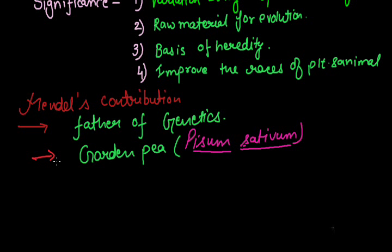Mendel's conclusions were rediscovered simultaneously by three scientists — Hugo De Vries, Carl Correns, and Erich von Tschermak. These three scientists rediscovered Mendel's laws after his death because his work was not recognized when he was alive. Although he presented all his experiments before the Brünn Natural Society in 1865 and his paper was published in the Annual Proceedings of the Natural History Society in 1866, his work was still not recognized at that time, which is why his laws were later rediscovered by the three scientists.